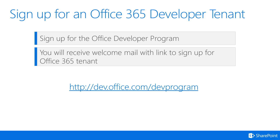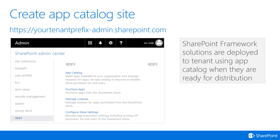Currently, Office 365 developer tenants can have up to 25 licenses, so you can mimic the behavior of your customizations in scenarios where end users are not administrators — which is always a good practice for development. When you have the tenant, the key point is to create the app catalog site. The app catalog site is not created by default for all Office 365 tenants. SharePoint framework solutions are deployed to the tenant using the app catalog when they are ready for distribution.